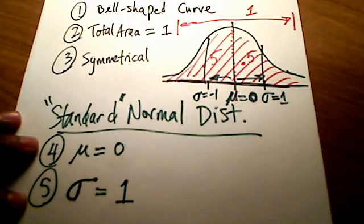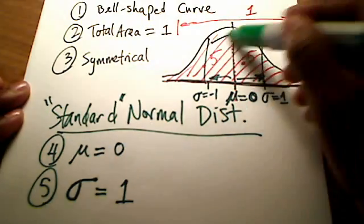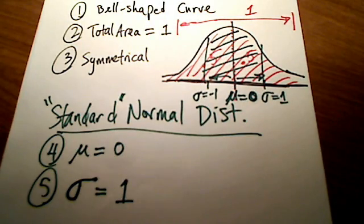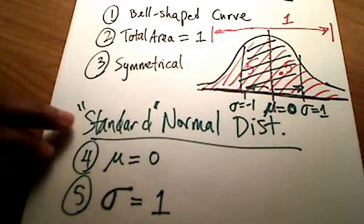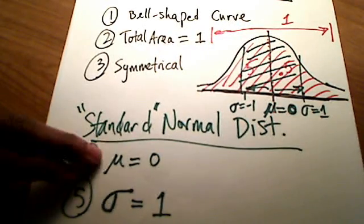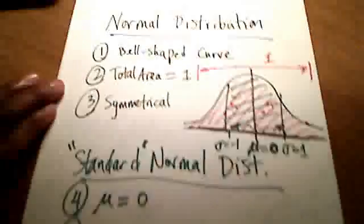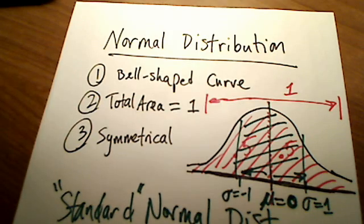And there's this other idea called the empirical rule, but we can get into that another time. You know, 68% of your data is sitting within one standard deviation. But this is just a real rudimentary level of what we mean by a standard normal. It means that the population mean is 0, population standard deviation is 1. And when we say normal, we mean it's bell-shaped, total area is 1, and it's symmetrical. Hope that helps.